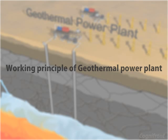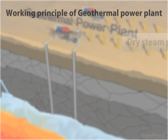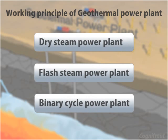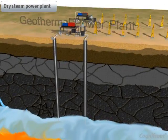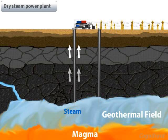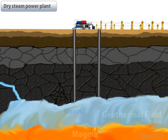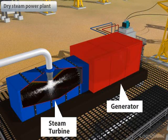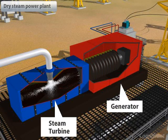Working principle of a geothermal power plant. There are three types of geothermal power plants. The first is the dry steam power plant. In this power plant, steam is generated directly from the geothermal reservoir. This steam is directly supplied to the turbine which is coupled with a generator.